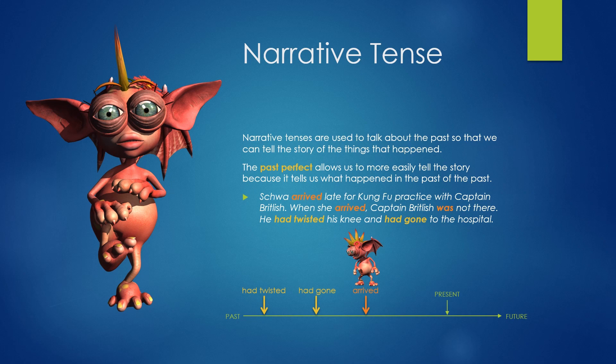Narrative Tense. Narrative tenses are used to talk about the past so that we can tell the story of the things that happened. The past perfect allows us to more easily tell the story because it tells us what happened in the past of the past. Schwa arrived late for kung fu practice with Captain Britlish. When she arrived, Captain Britlish was not there — he had twisted his knee and had gone to the hospital.